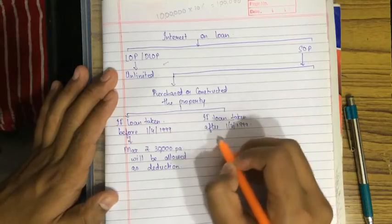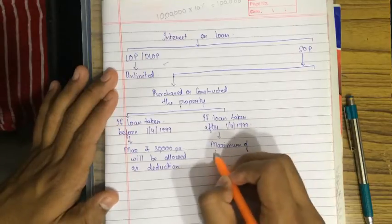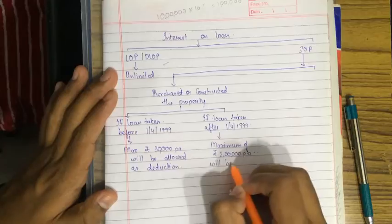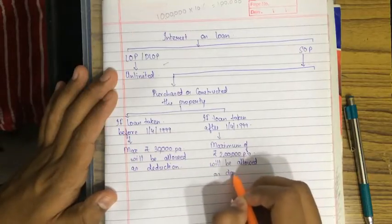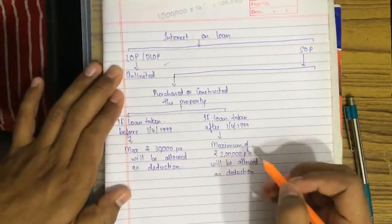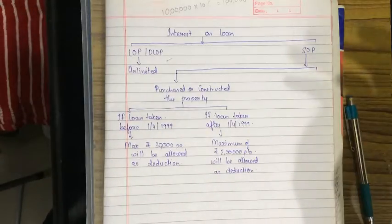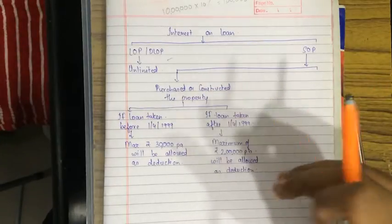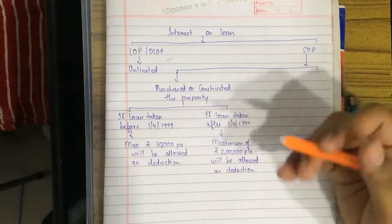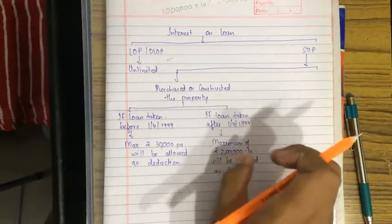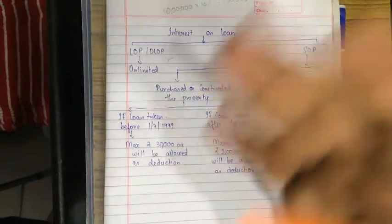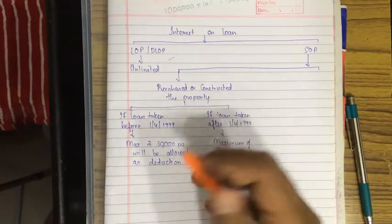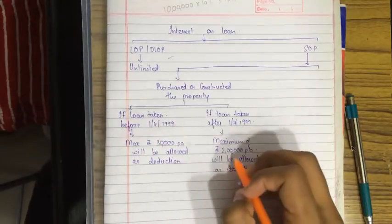If the loan is taken after 1st April 1999, the maximum deduction allowed is rupees 2 lakh per annum. For example, if the assessee took the loan on 30th June 1999 and the interest is below 2 lakhs, he can claim the full deduction. If the interest is above 2 lakhs, say 2 lakh 50,000, he will only get 2 lakhs per annum as deduction under Section 24.